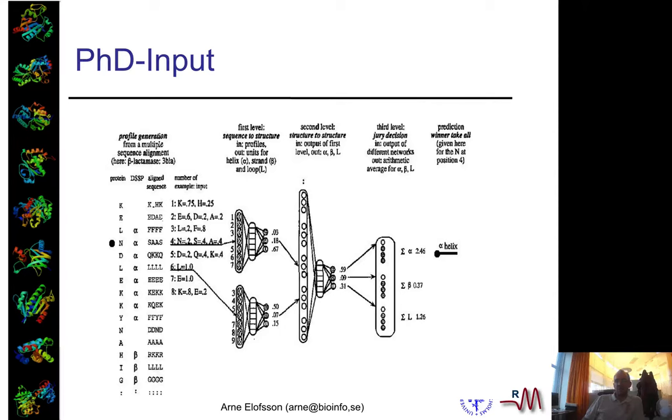And then for a certain residue in the middle, like in the GOR method, you have a window looking at it. The method predicts helix, sheet, or coil, and you slide this window through the sequence.